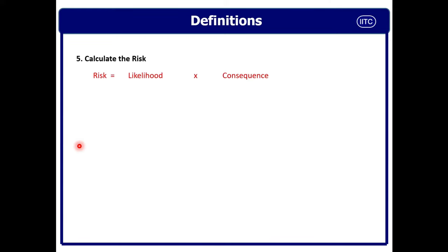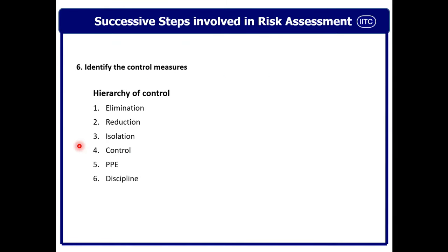Step five — calculate the risk: risk is bidimensional, likelihood multiplied by consequence. The likelihood may be low or high; the consequence may be low or high. Step six — identify the control measures. When identifying control measures, you follow the ALICPD principle: eliminate the hazard; if not possible, reduce the hazard; if not possible, isolate the hazard; if not possible, control the hazard; then use PPE — personal protective equipment; and last, discipline. Discipline should not be number one. Please go through my training module on ALARP demonstration and hierarchy of control for depth of knowledge on risk management.